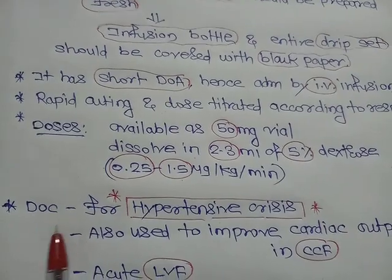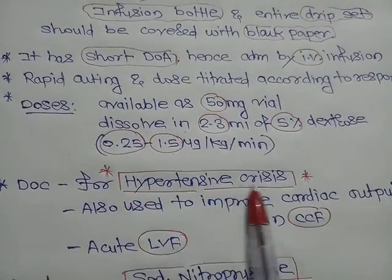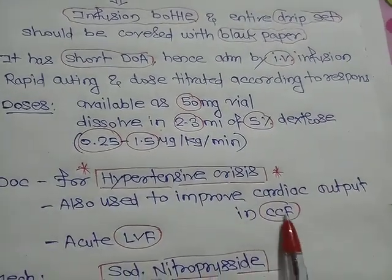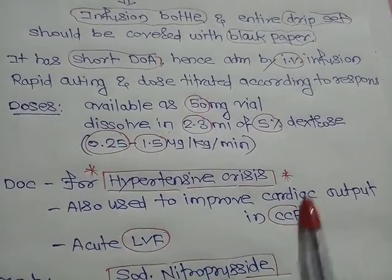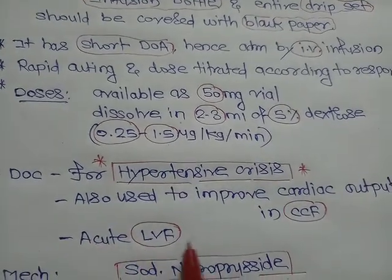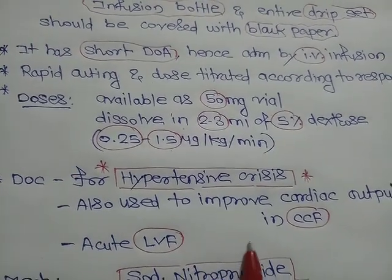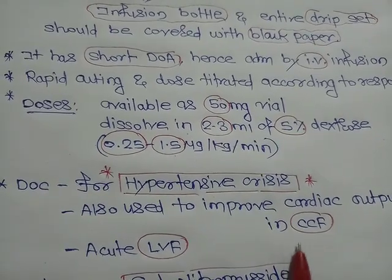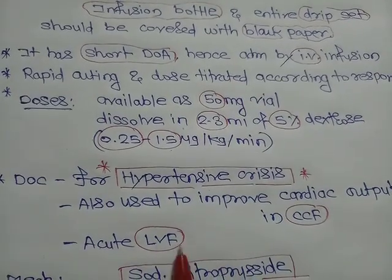Sodium nitroprusside is used for hypertensive crisis — it is the drug of choice. It is also used to improve cardiac output in congestive cardiac failure patients, and it is used in acute left ventricular failure along with dobutamine for its inotropic effect to increase the force of contraction.